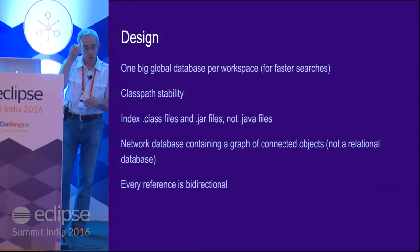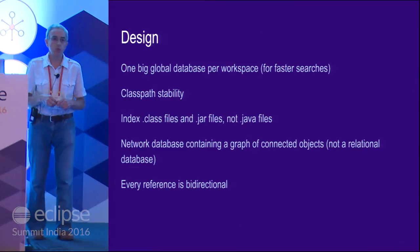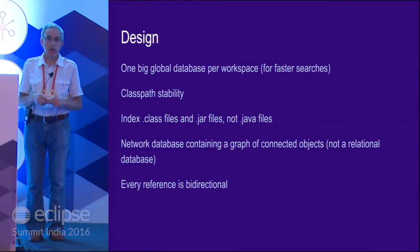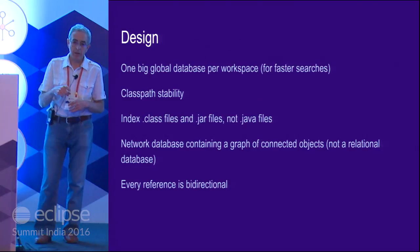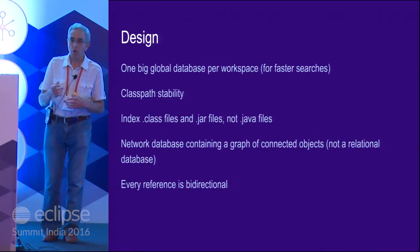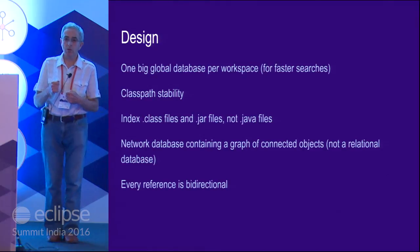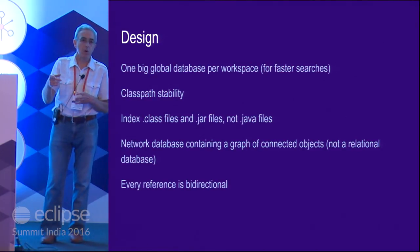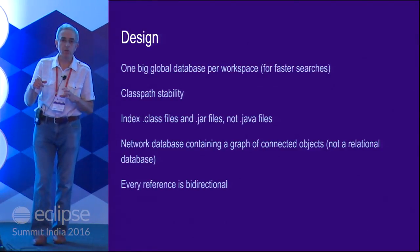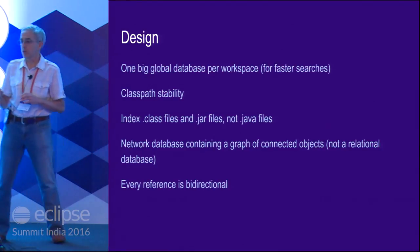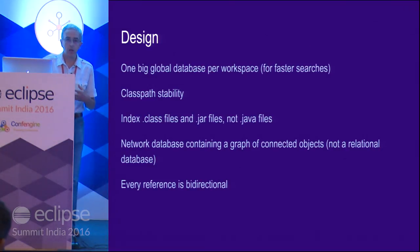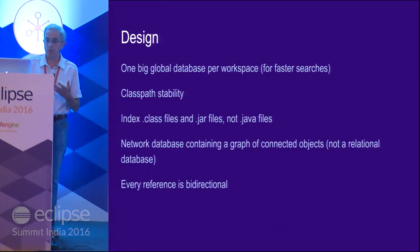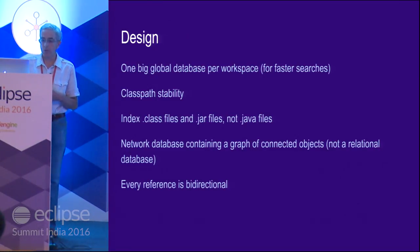Another very important requirement is that we don't want to rebuild our database when the class path changes. We may have to update it — for example if new jar files are added — but we don't want to rebuild everything when one jar file is added on top of 1,000. So we want stability. This is intended for indexing jar files and class files, not source files really.